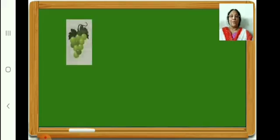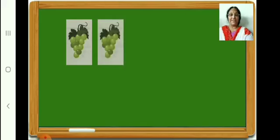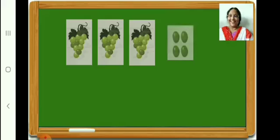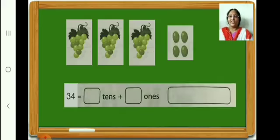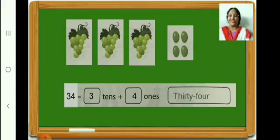How many grapes are there? 10. How many grapes in this bunch? 10. Here, how many? 10. In the last box, how many? 4. Therefore, in all, count and see — 34. 34 is equal to 3 tens plus 4 ones. Write in your book. Now let us write the number name 34. Finished writing? Very good. Let us go on to the next.